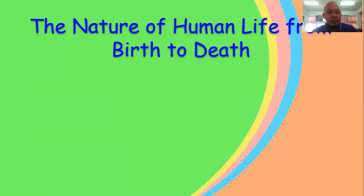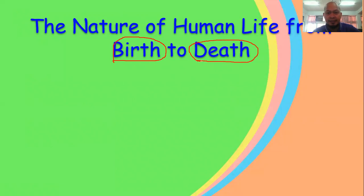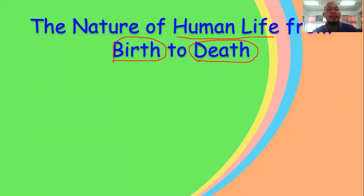Birth means the day we were born — that is your birthday — up to our death. Death meaning the day we will die. Now we are going to discuss one by one about the cycle of human life.